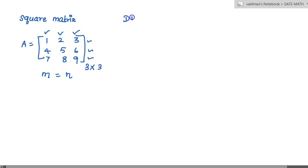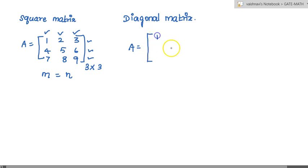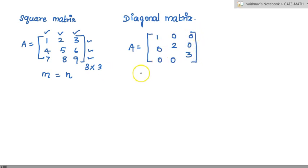Next is diagonal matrix. A matrix A is said to be a diagonal matrix if all the elements except the main diagonal are zero. For example, this is the main diagonal. This is called a diagonal matrix. That is, aij is equal to zero for i not equal to j.